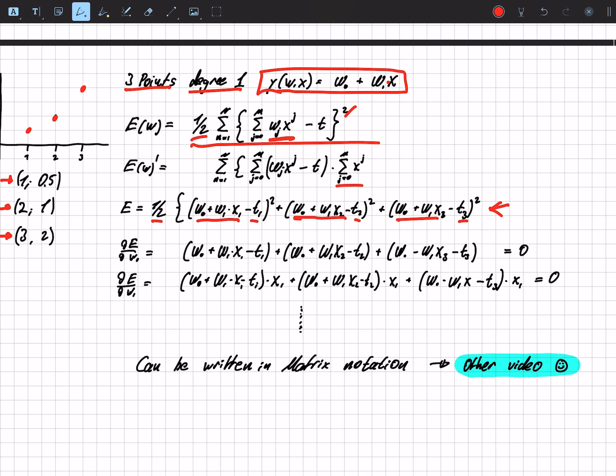Now because we have two w's, we have w0 and w1, we want to find the local minimum with respect to w0 and w1. So now we have two terms.